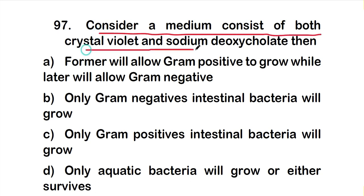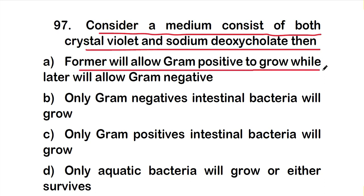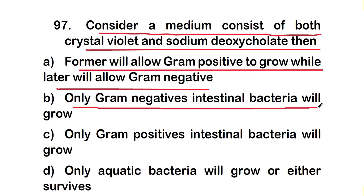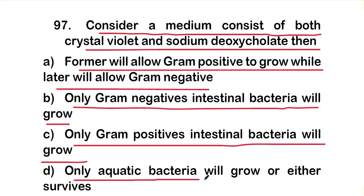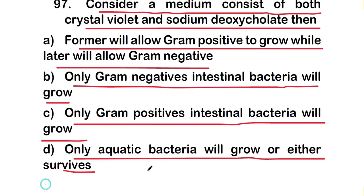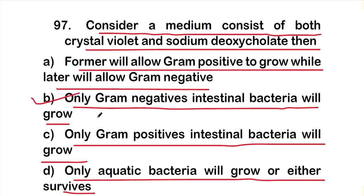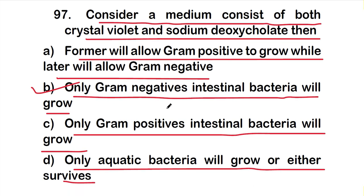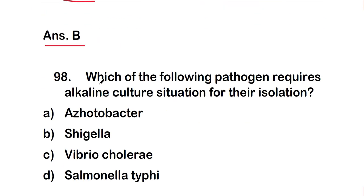Question number 97: Consider a medium consisting of both crystal violet and sodium deoxycholate. Option A: former allows gram-positive to grow while latter allows gram-negative, option B: only gram-negative intestinal bacteria will grow, option C: only gram-positive intestinal bacteria will grow, option D: only aquatic bacteria will survive. The right answer is option B — only gram-negative intestinal bacteria will grow, as crystal violet and sodium deoxycholate selectively support gram-negative intestinal bacteria.